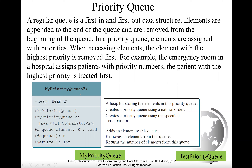The priority queue has these constructors. You can create a default priority queue or create a priority queue using the specified comparator. If you use the default, the elements are compared based on natural order using the Comparable interface.